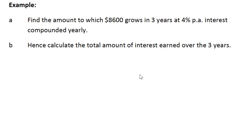In a previous lesson we looked at the concept of a constant multiplier that helps us quickly calculate compound interest. Now here we're investing $8,600 for a period of three years at a rate of 4% per annum and it's compounded yearly.